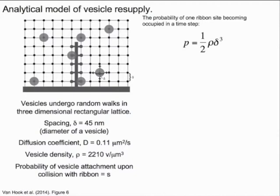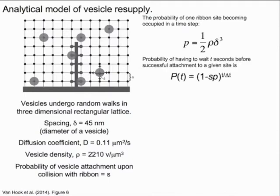Because the ribbon can only be approached from one side, we divide this by 2. The probability of having to wait at least t seconds before a vesicle attaches to a ribbon site is given by this function, with t over delta t being the total number of steps elapsed in t seconds. Thus, if we start with an empty ribbon, the estimated number of vesicle sites that are filled at time t is given by this function, where n is the maximum number of vesicles that can occupy the ribbon.